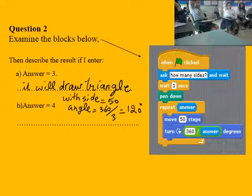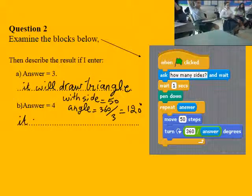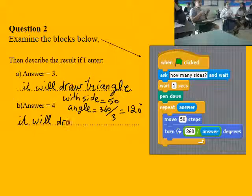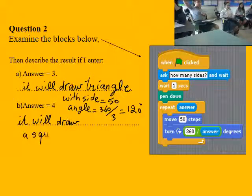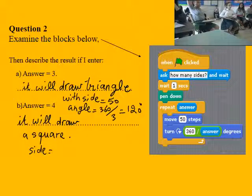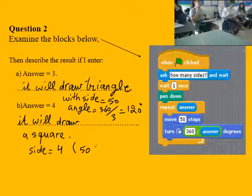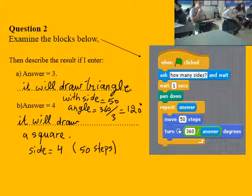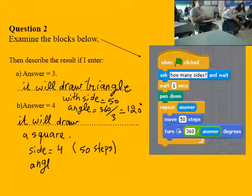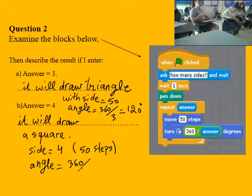Okay, if I enter answer equals four, it will draw what? A square. Side equal, yes, the measure of each side is 50 steps with angle 360 over four equals 90 degrees.